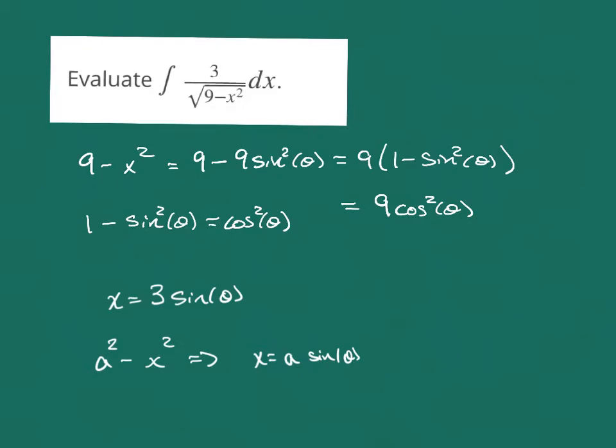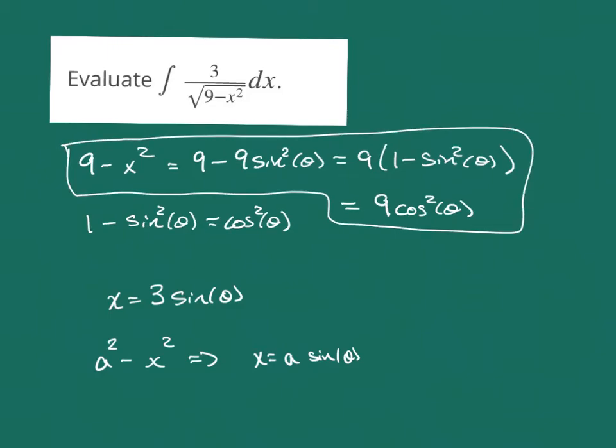And so that expression then simplifies to 9 times cosine squared. And so that's what I have. That's what I'm really going to want as far as what my substitution will be. So now let's carry this out with the integration.